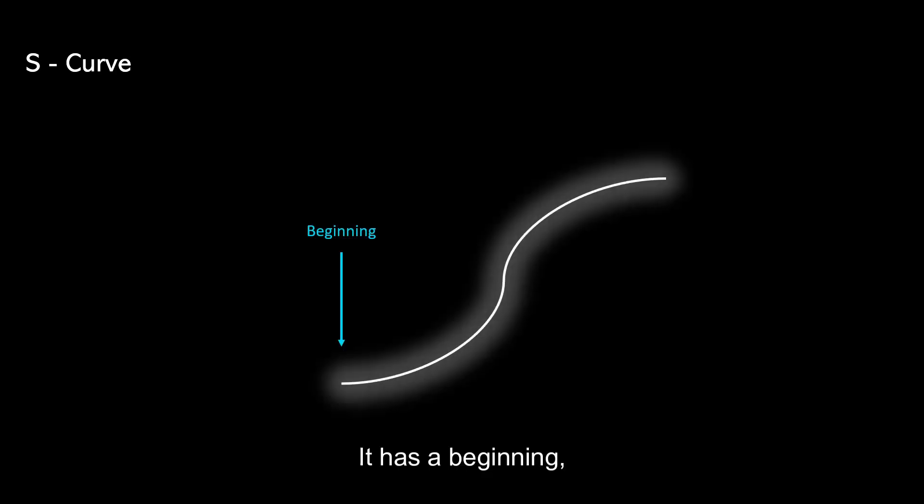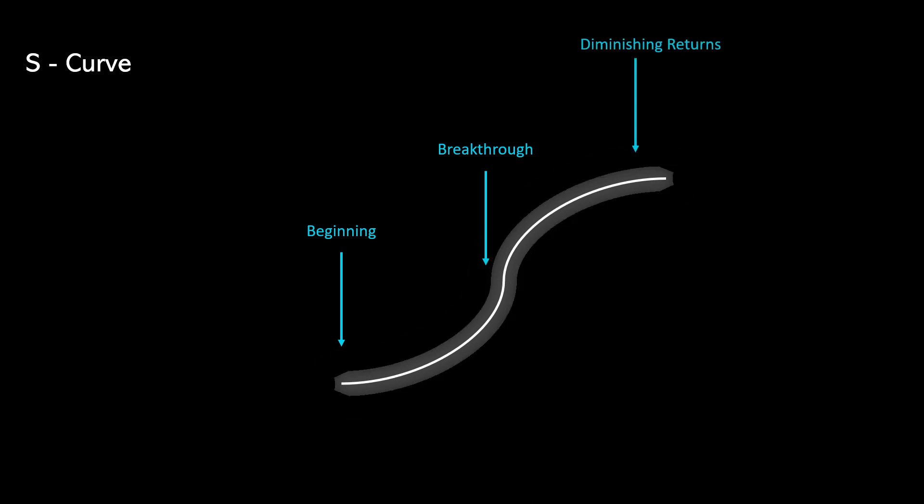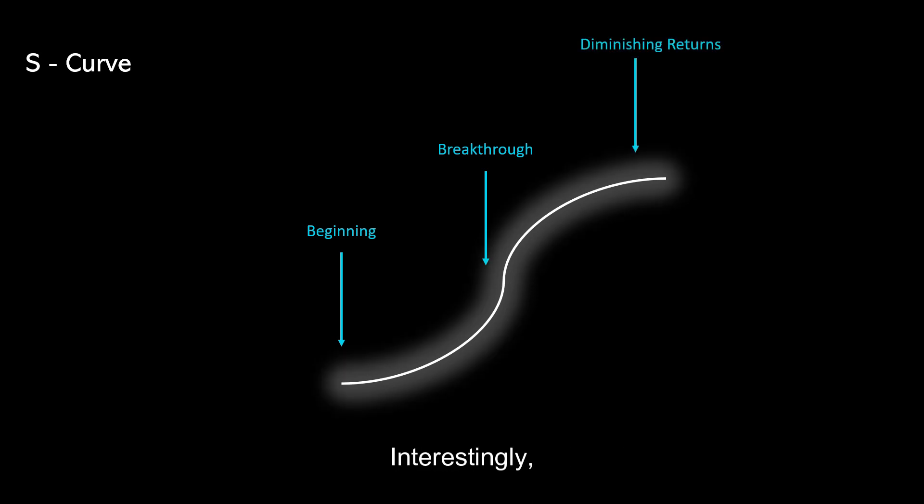Coming back to the main discussion, how can we obtain this probability scale? Well, have you ever pondered over the shape of an S-curve? It has a beginning, then a period of accelerated gradient, and finally a flattening slope. Interestingly, many phenomena in our world follow the same trajectory.